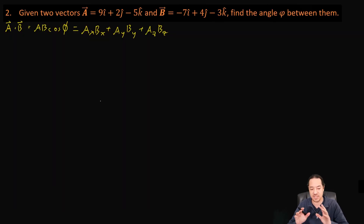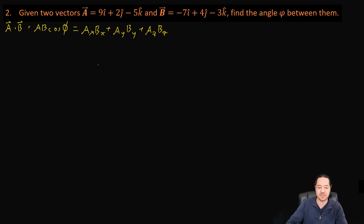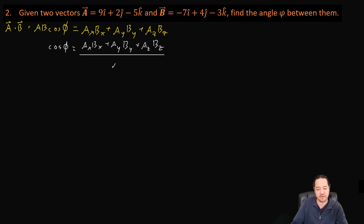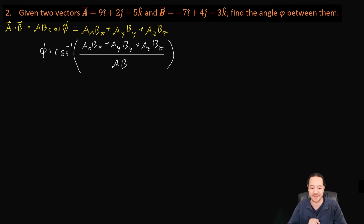So what we're doing is setting these two formulas equal to each other and solving for phi. That means cosine of phi equals AX BX plus AY BY plus AZ BZ, all over the magnitudes of A times B. Then we take the inverse cosine of both sides and we'll be able to solve for this angle phi.